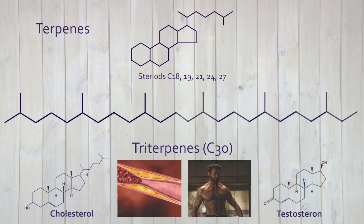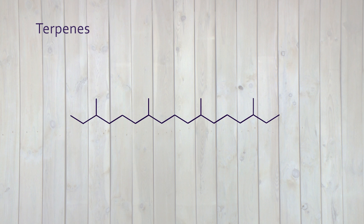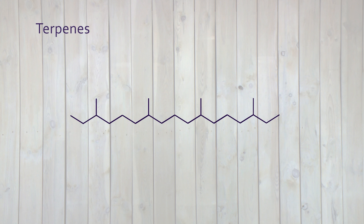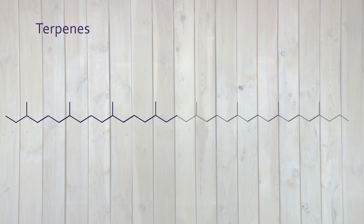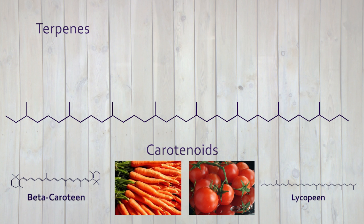Adding another hemiterpene to the sesquiterpene forms a diterpene of 20 carbons. Coupling two diterpenes together and you have the backbone of carotenoids such as beta-carotene and lycopene.